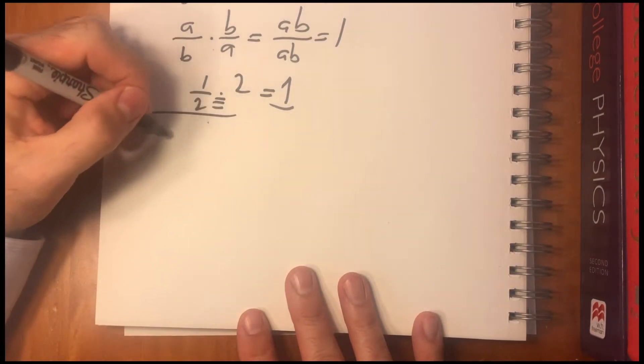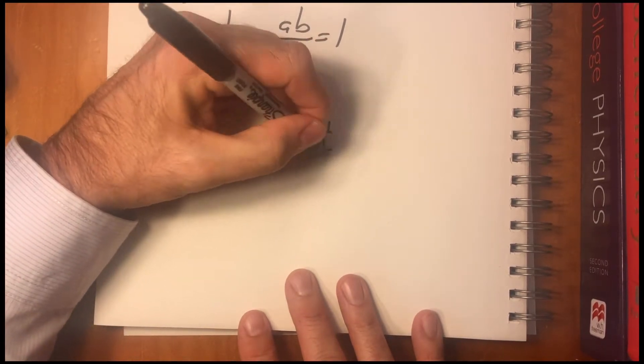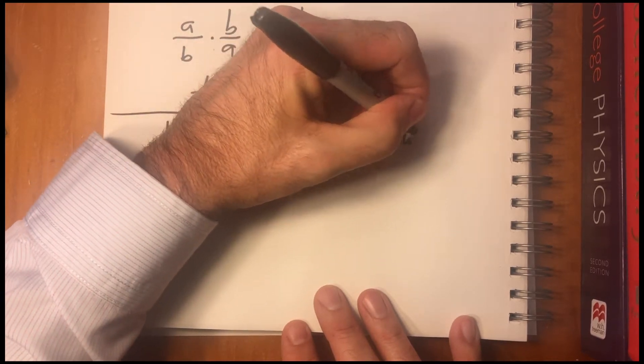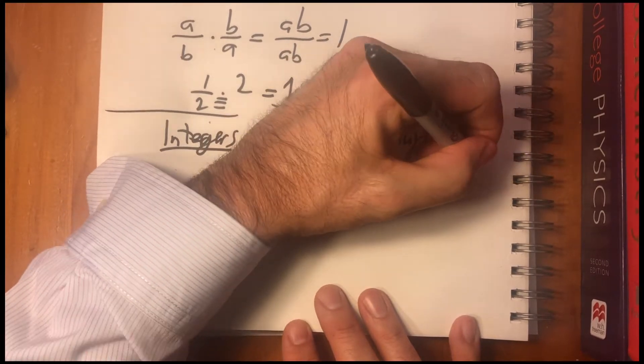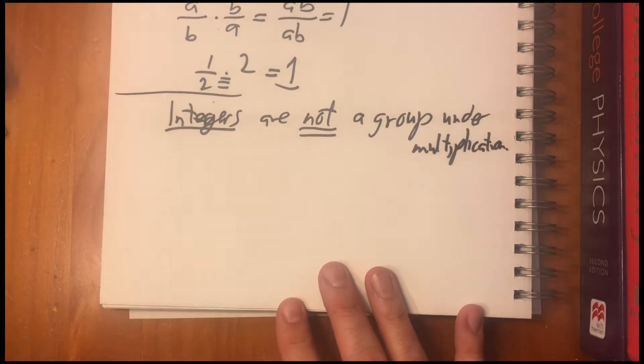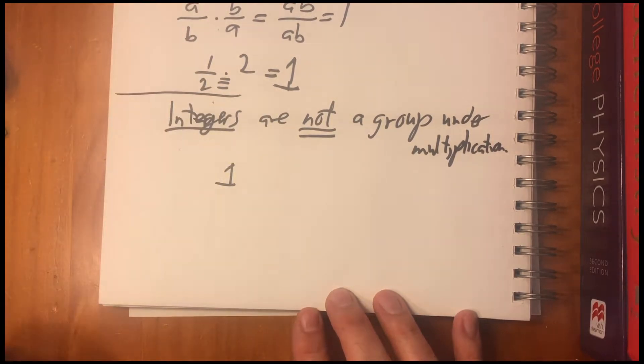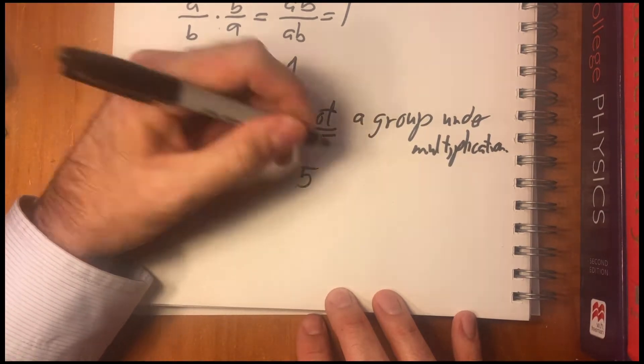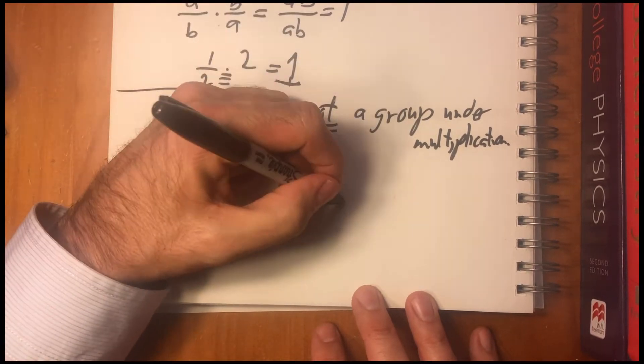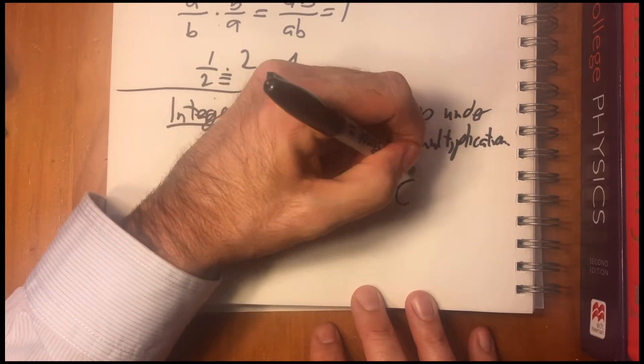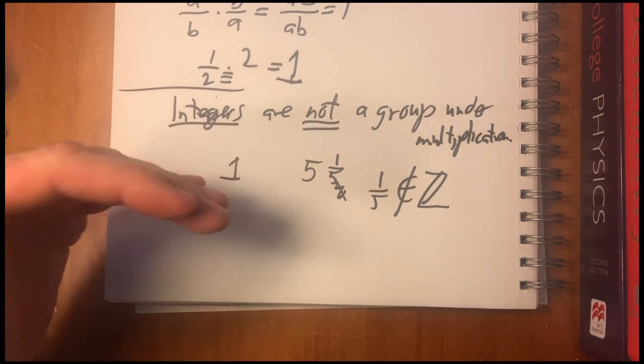But what's interesting is integers are not a group under multiplication. Why? Because if the multiplicative identity of the integers is one, just take five as an example. Five doesn't have an inverse because what's the inverse of five? It's actually one fifth, but that's not but one fifth is not an element of the integers. So this is an example of something that's not a group.